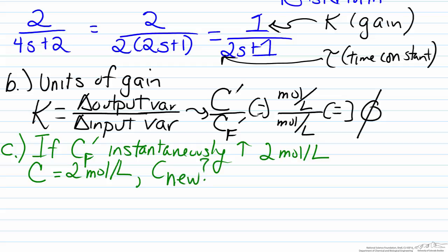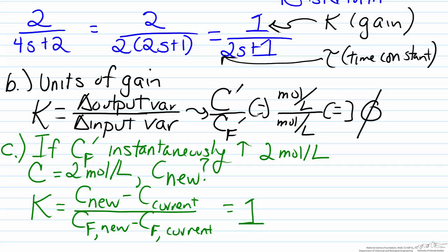In order to do that we can again take advantage of the definition of the gain. So the gain is the change in the output variable, so that will be C new minus the current concentration divided by the same for the feed concentration. We know the fact that the gain for this process is equal to one, and we know from the problem statement that the Cf has been increased instantaneously by two moles per liter, so that will be two in the denominator. We know that the current concentration of the outlet is two moles per liter, so we are solving for C new.